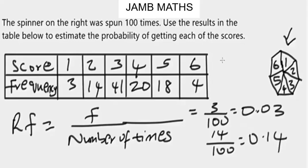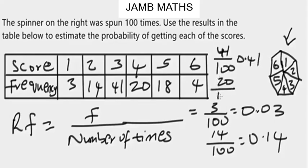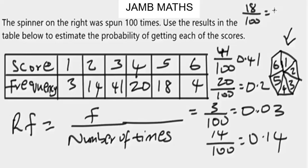When the score is 3, the relative frequency is 41 over 100, giving us 0.41. When the score is 4, it's 20 over 100, giving us 0.20. When the score is 5, it's 18 over 100, giving us 0.18. And when the score is 6, it's 4 over 100, giving us 0.04.